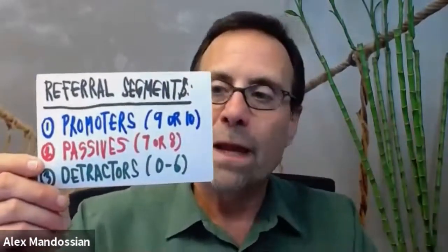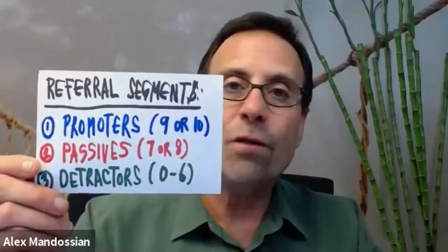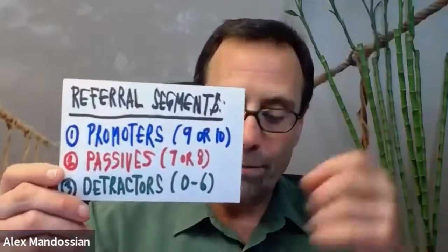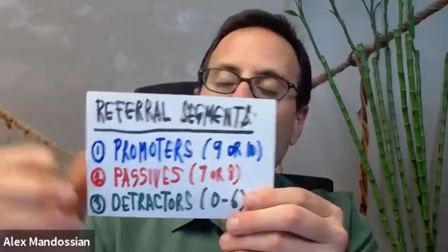If you get a 9 or 10, that's a promoter. A 7 or 8 is a passive, and 0 to 6 is a detractor. It's important to ask a second question. If you get a promoter, ask: 'What would you say to them specifically?' Why? Because you're going to extract their sales pitch. The referents don't really know how to refer you — they don't have fluency. You have to teach them. This is where you create a network of referents to lower your customer acquisition cost.